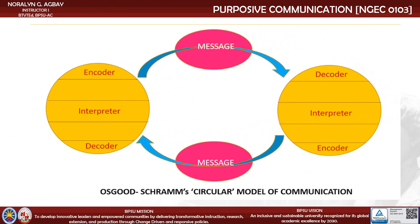The second model is proposed by Osgood and Schramm. This illustrates that both the speakers or interlocutors perform the same functions. Both of them initiate ideas, interpret ideas, and decode ideas. This is considered to be one of the first cyclical models in communication. As the illustration shows, the message goes between the speakers. Both interlocutors send messages and interpret them at the same time. One can ensure understanding when the person we speak to can respond to the message delivered.